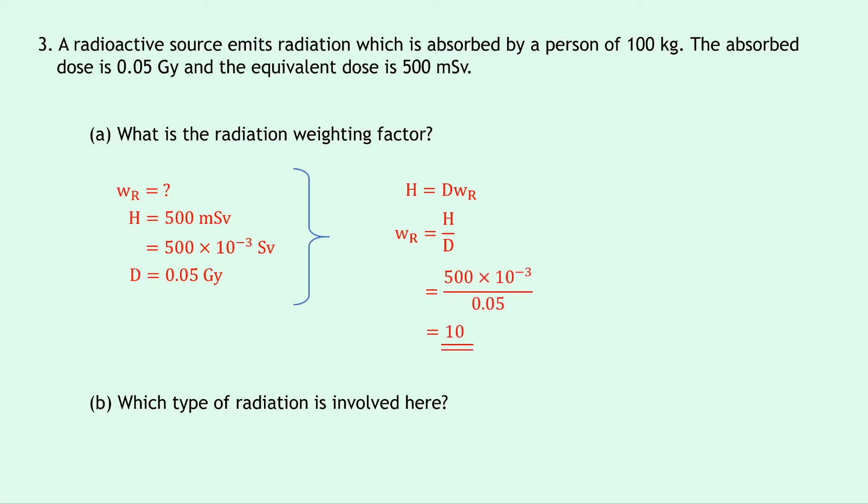Part B says which type of radiation is involved here? Well, because we now know its radiation weighting factor, we can now just go to the table of radiation weighting factors on the datasheet, just like we did in questions 1 and 2. And we should see from the datasheet that the radiation weighting factor of 10 is given for fast neutrons.